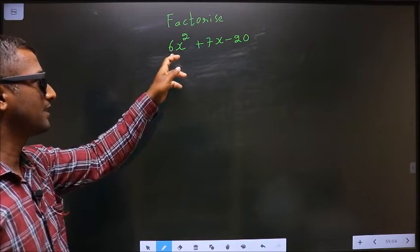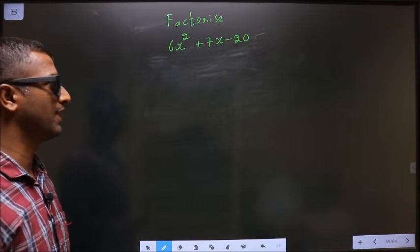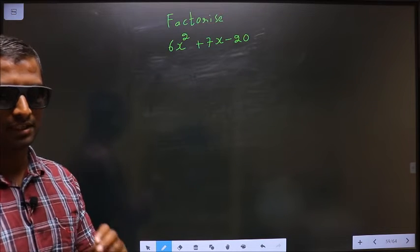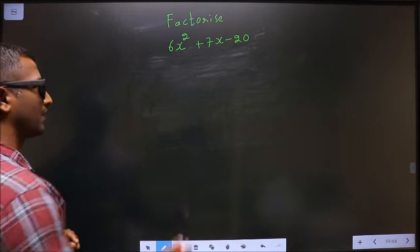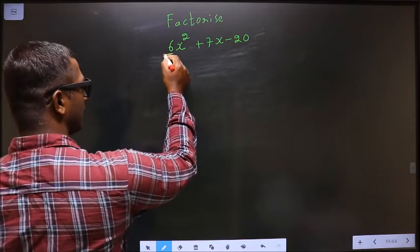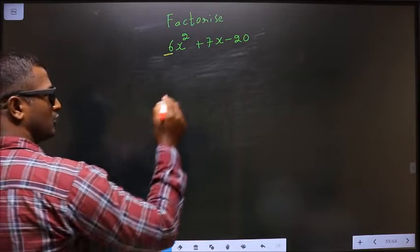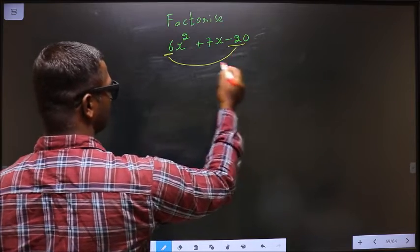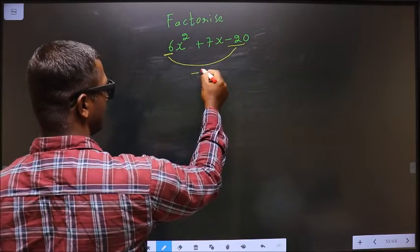Factorize 6x² + 7x - 20. To factorize any quadratic equation, step 1: The x² coefficient, in this case 6, should be multiplied to the constant, -20. So 6 × -20 = -120.